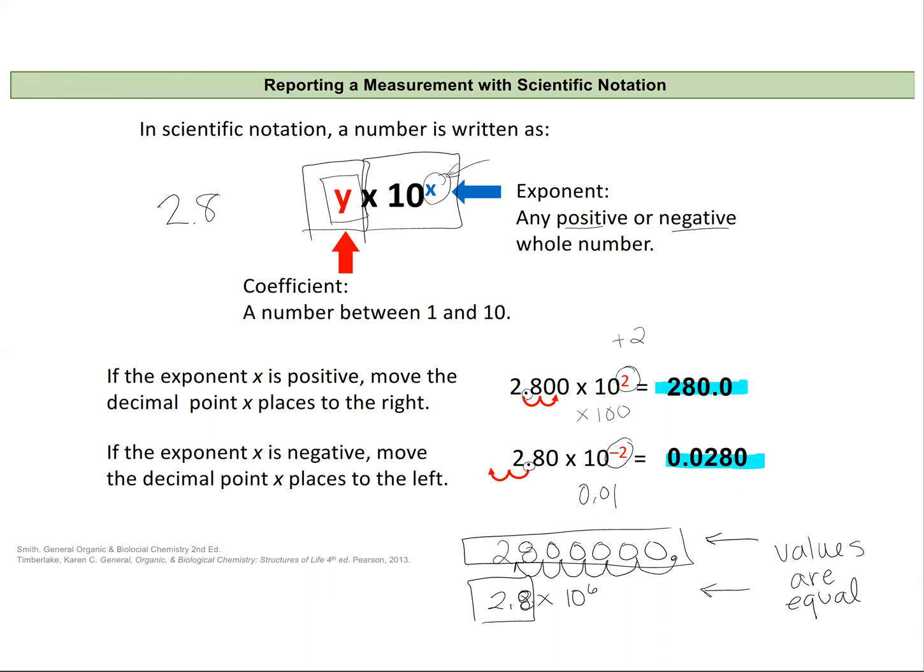One thing I'd like to point out about this is in both cases, the number is represented by a value, then a decimal place, and then the remaining values as decimals.